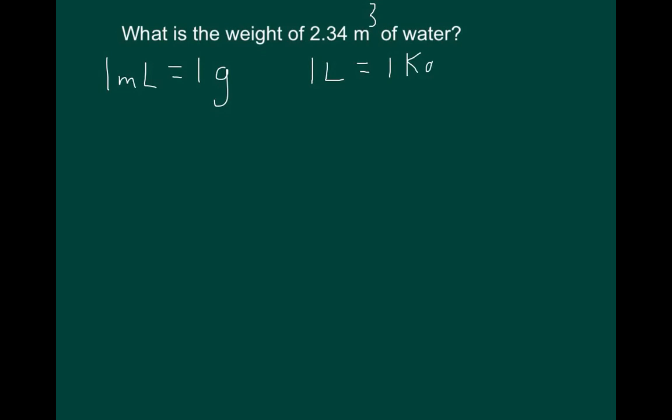One liter of water would therefore be one kilogram. A meter cubed of water, which is one meter by one meter by one meter, contains 1,000 liters of water, which would mean a cubic meter is equivalent to 1,000 kilograms, otherwise known as a metric ton.